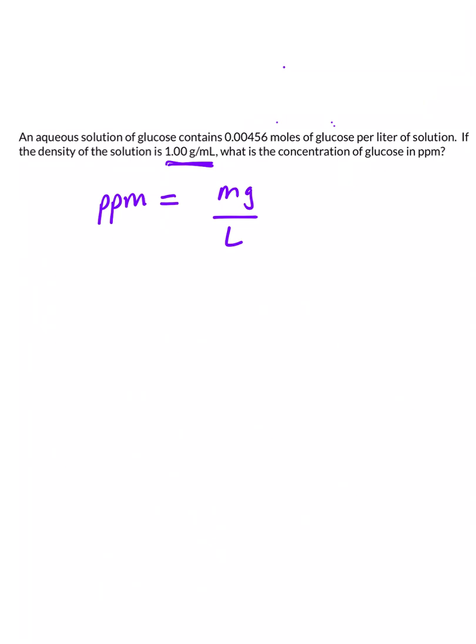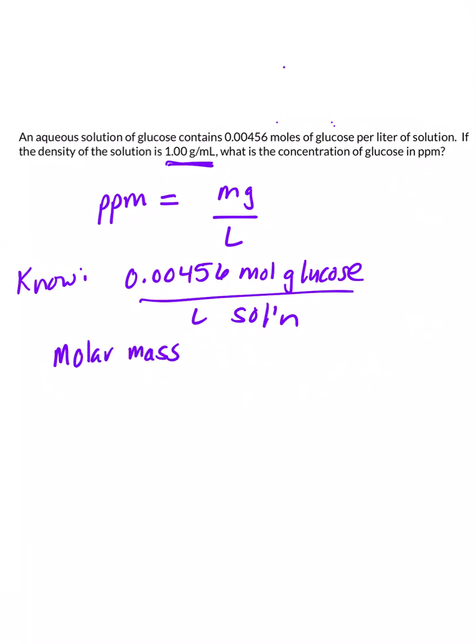So we know in this problem we have 0.00456 moles of glucose per liter of solution. We know the density is 1. We can also look up the molecular weight or molar mass of glucose, and that is 180.156 grams per mole.